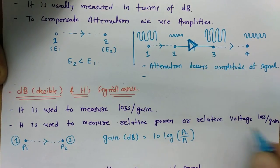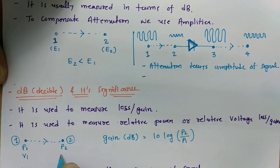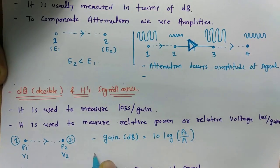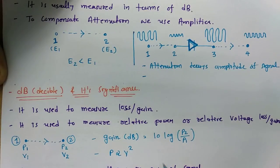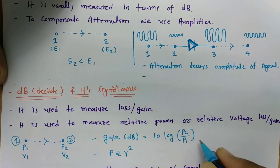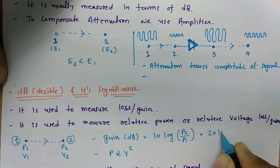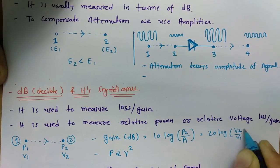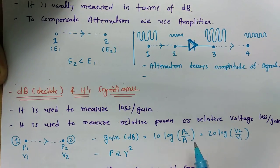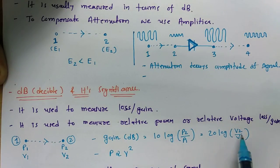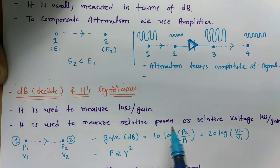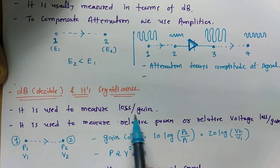If we want to measure relative voltage — with V1 at the input and V2 at the output — since power is proportional to the square of voltage, when measuring gain in terms of voltage it becomes 20 log of V2 divided by V1. So remember: gain in terms of power is 10 log of output power by input power, but in terms of voltage it is 20 log of output voltage by input voltage.